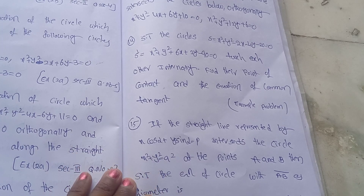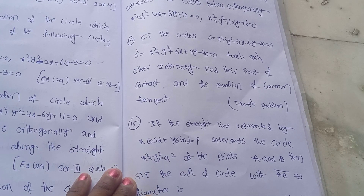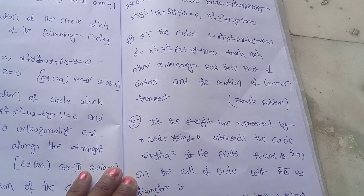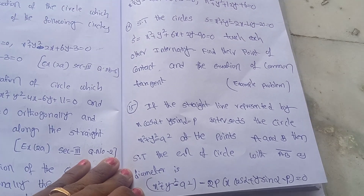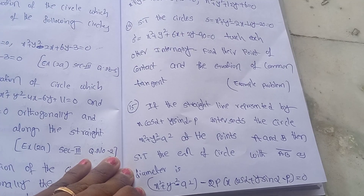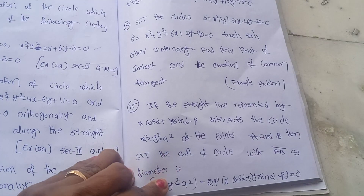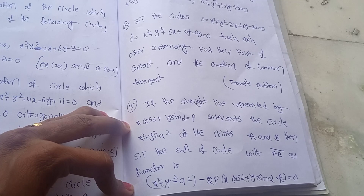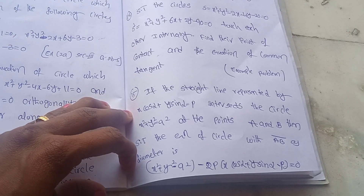Next, if the straight line x·cosα + y·sinα = p intersects the circle x² + y² = a² at points A and B, then show that the equation of the circle with AB as diameter is x² + y² − a² − 2p(x·cosα + y·sinα − p) = 0.